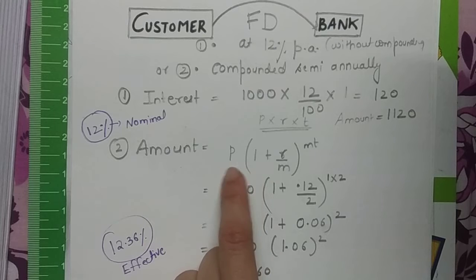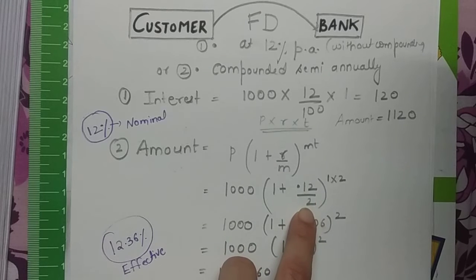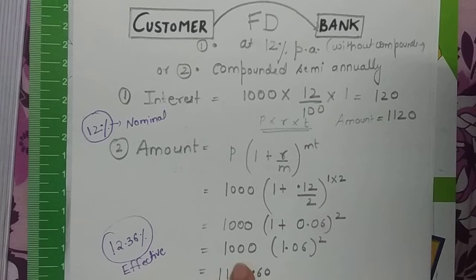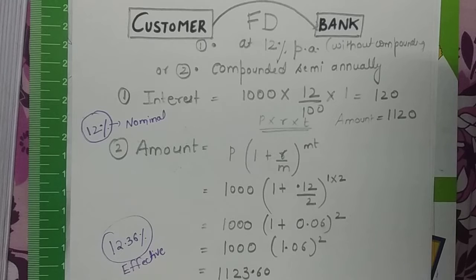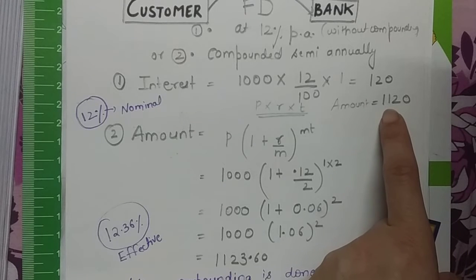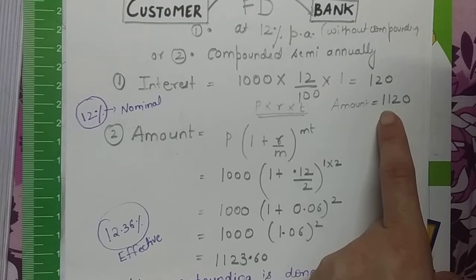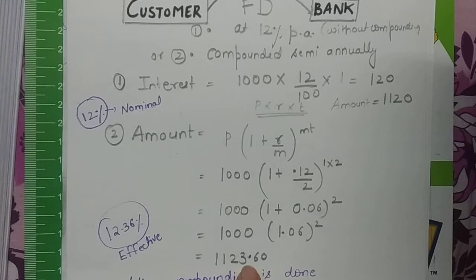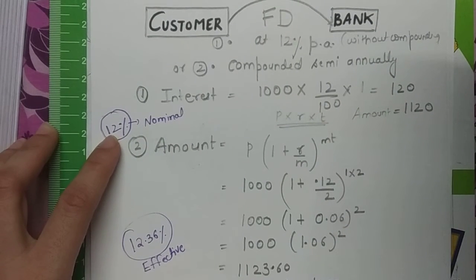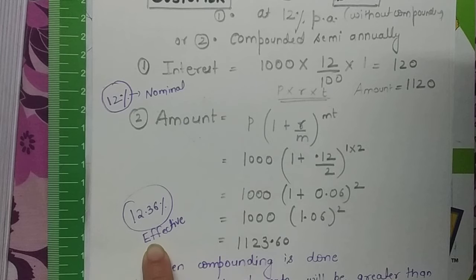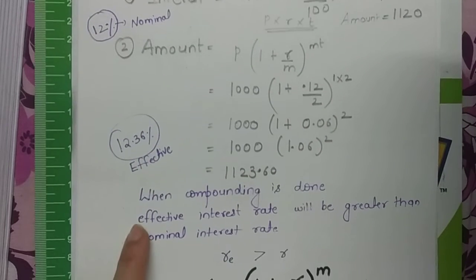The amount credited is P × (1 + r/m)^(m×t). For 12% compounded semi-annually, dividing by 2 gives the customer Rs 1123.60 at maturity. So while the layman expects Rs 1120, the customer actually receives Rs 1123.60. The nominal rate of interest is 12%, but the effective rate of interest — the actual real yield — is 12.36%.